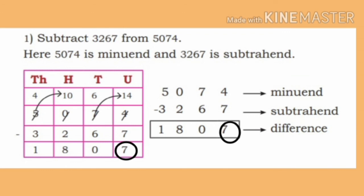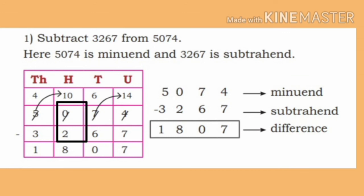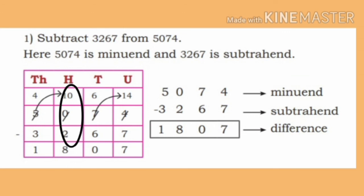Now in the tens place of the Minuend, 6 is represented. Subtracting 6 from 6, we get 0. Write 0 in the tens place. In the hundreds place of the Minuend, 0 is there. It is not possible to subtract 2 from 0. Therefore, borrow 1 from the thousands place. 1 thousand means 10 hundreds. On subtracting 2 from 10, we get 8.